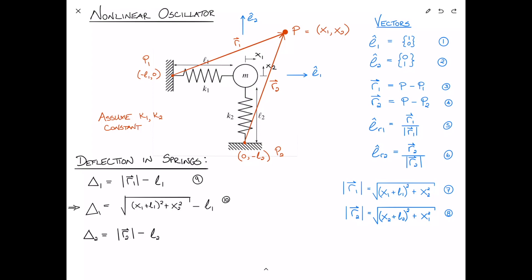Then similarly for delta 2, it's the magnitude of r2, which is the final length of spring 2, minus l2, the initial length of spring 2, and that can be rewritten as the square root of x2 plus l2 squared plus x1 squared minus l2. We'll number these 11 and 12. So we have very easily now found the stretch in each of the springs using vectors, and you can see clearly from the expressions for delta 1 and delta 2 the nature of the nonlinearity, and how moving x1 affects both delta 1 and delta 2, and similarly for x2.